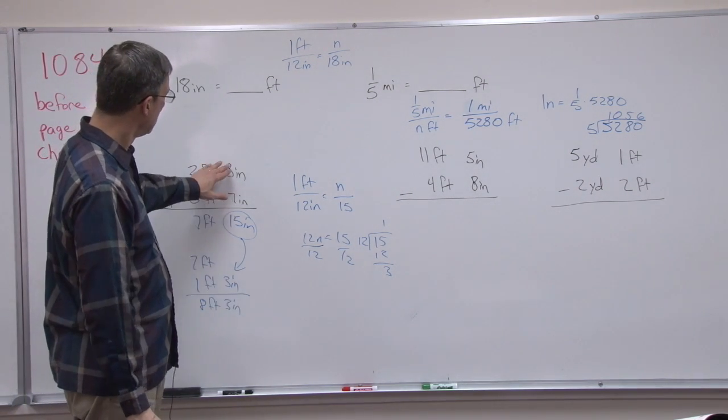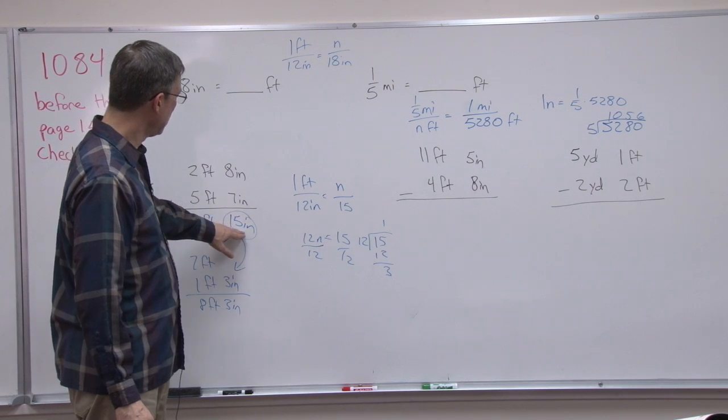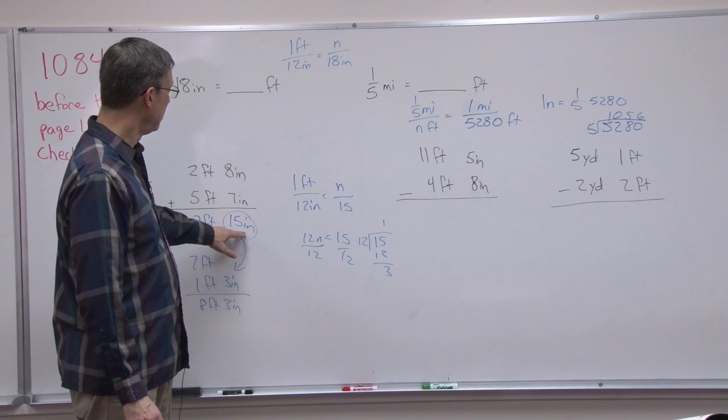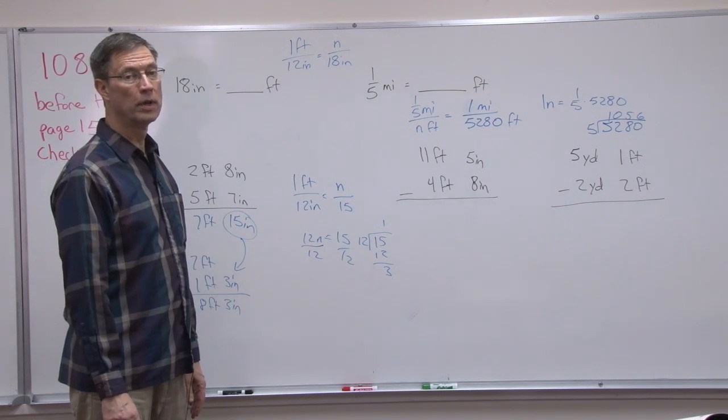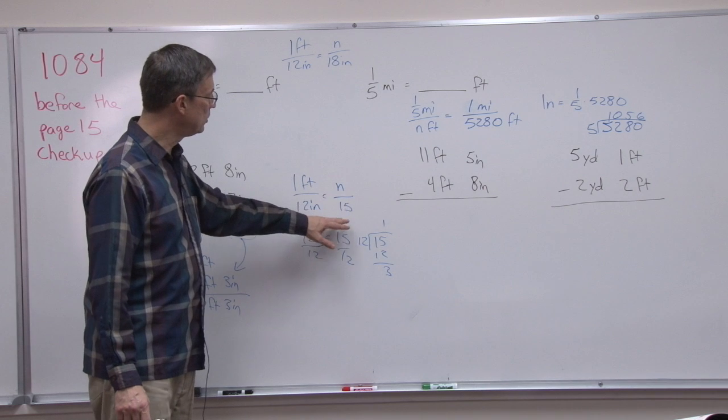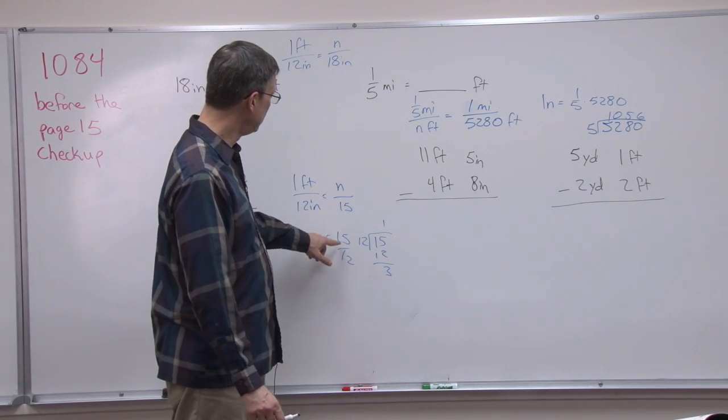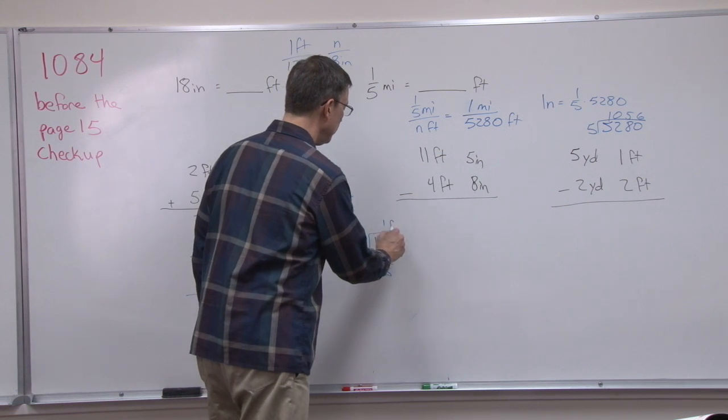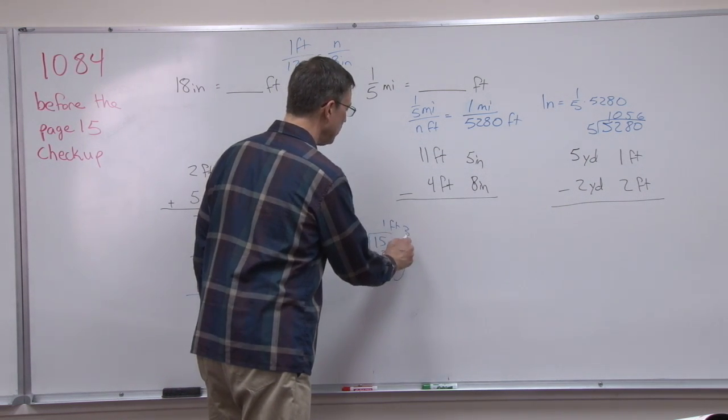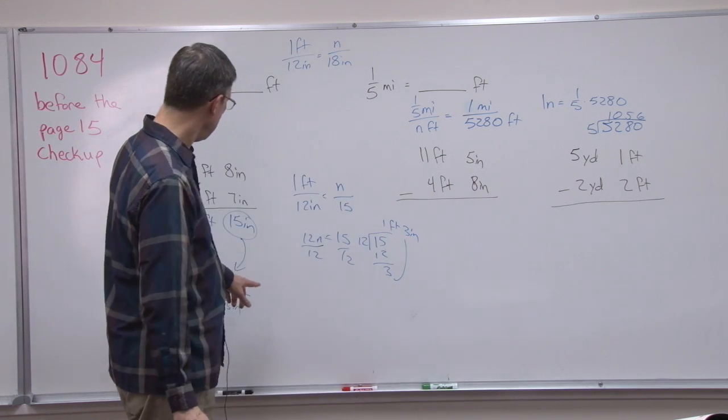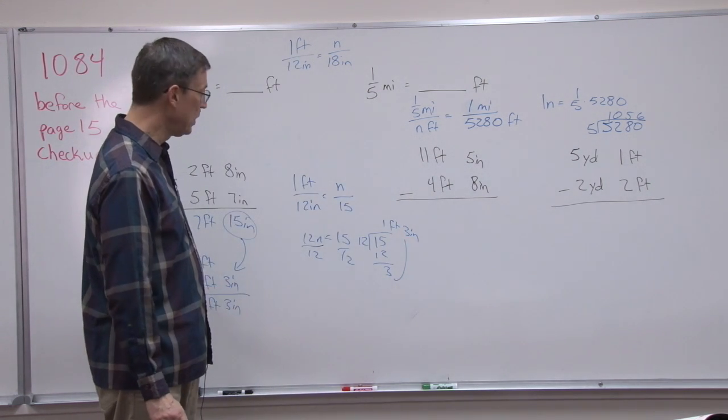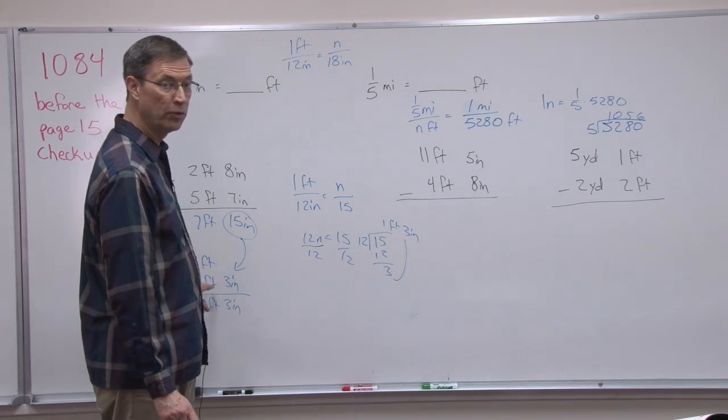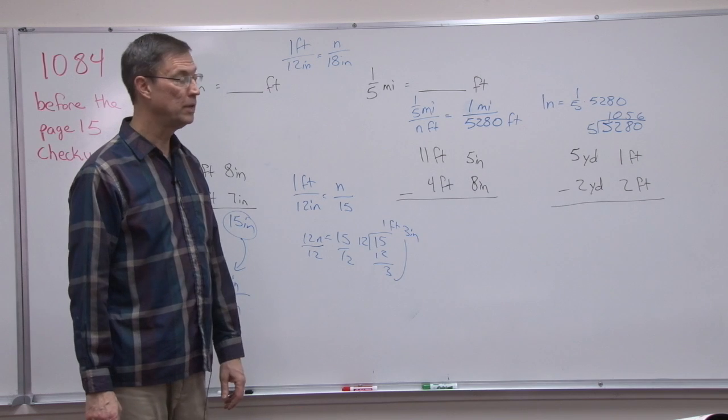So let's look at what we did again. We added the 8 plus 7 and got 15 inches, added the 2 plus 5 and got 7. But 15 inches is more than 1 foot. So by setting up the ratio, we can solve 15 divided by 12 means 1 foot, and the remainder here is going to be 3 inches. That came over here, and we substitute the 15 inches now. We substitute 1 foot 3 inches, and then we can add, and we have the answer.